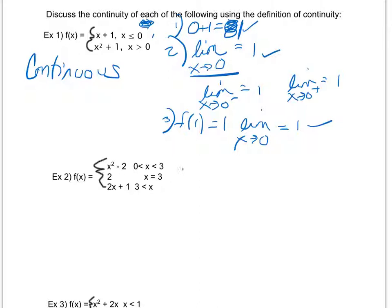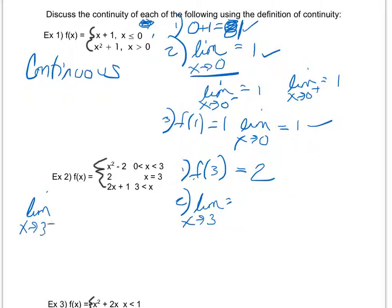So for condition one, f(3) equals two, because when x equals three I choose the middle function. For condition two, I need to determine the limit as x approaches three. Looking at the limit from the left — values smaller than three, using the first piece — I get three squared minus two equals seven. From the right — x values greater than three, using the bottom piece — I get two times three plus one equals seven. So the overall limit exists and equals seven.